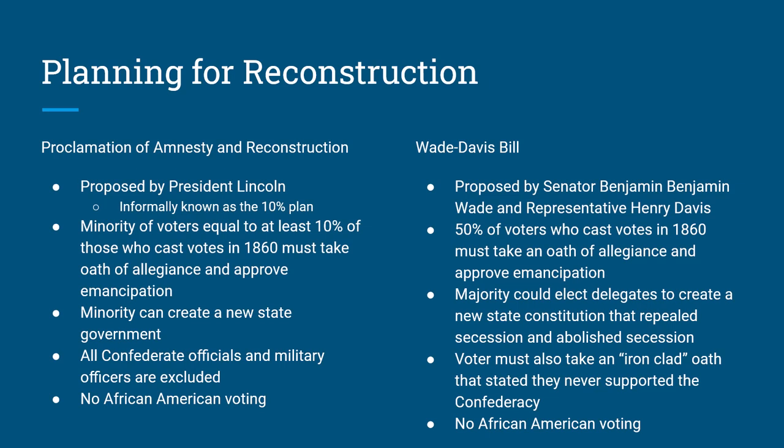Lincoln proposes his plan to the Senate and Congress; they refuse to take it up and turn it into a bill. When the Wade-Davis Bill is passed, it goes to President Lincoln for his signature and he vetoes it. So of the two plans put forth on what to do after Reconstruction, zero plans pass. When Lincoln is killed in April of 1865, there is no plan whatsoever on what to do when the war is over.